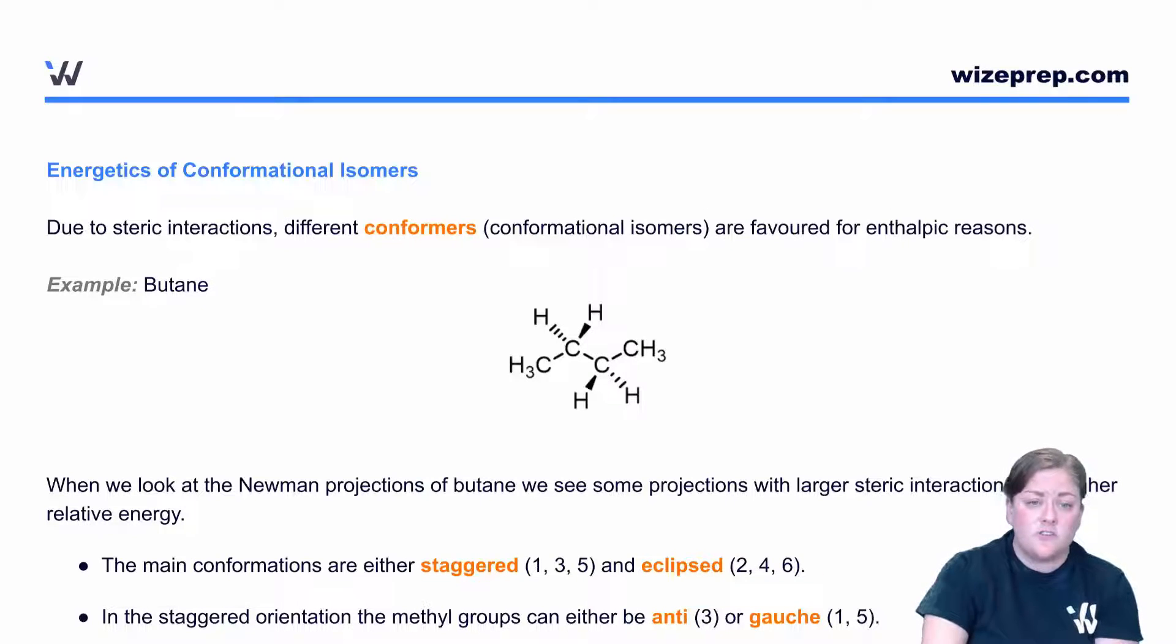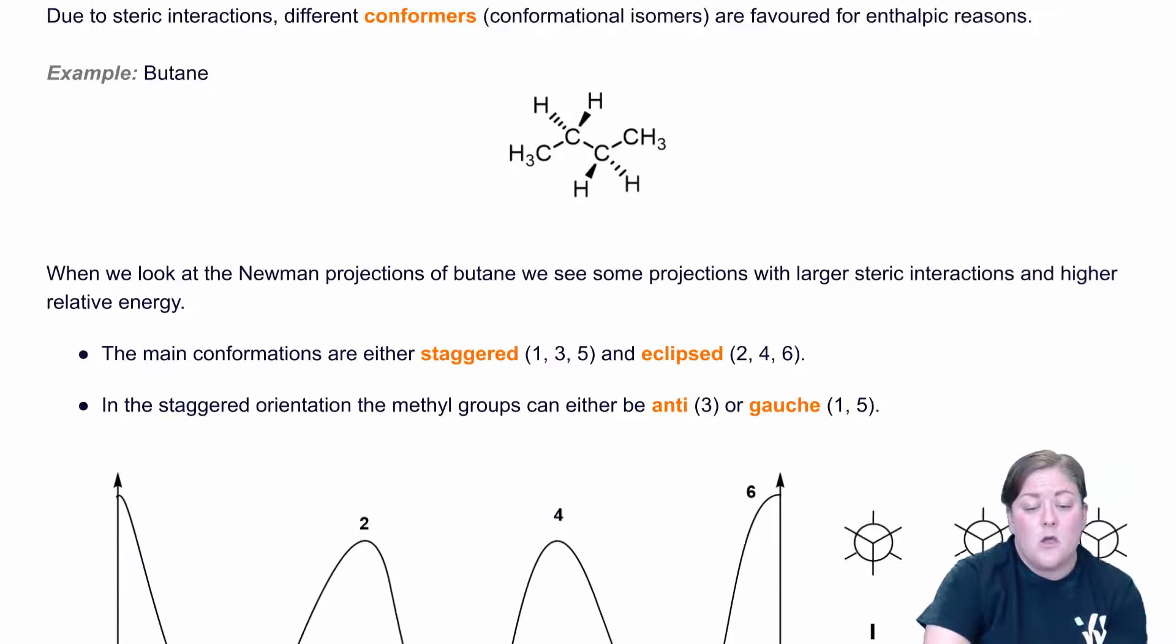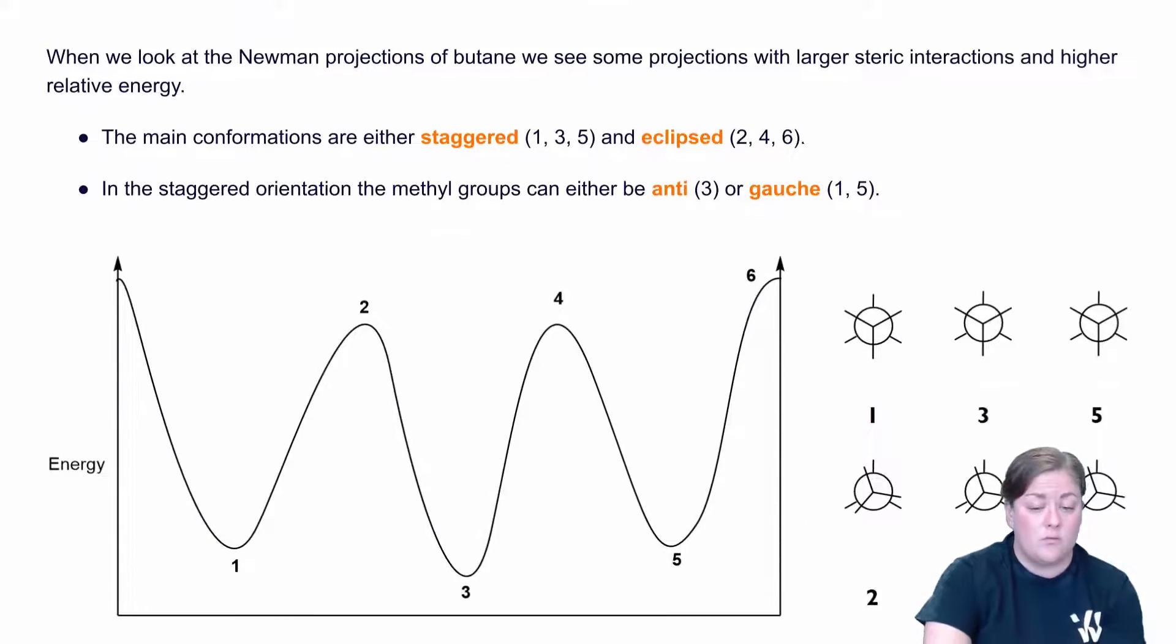When we look at the Newman projection for butane, we've got two different structures that we can draw. We have structures 1, 3, and 5, and structures 2, 4, and 6. Now 1, 3, and 5 are what we call staggered. And that means that the groups in the front and the groups in the back are 60 degrees apart from each other.